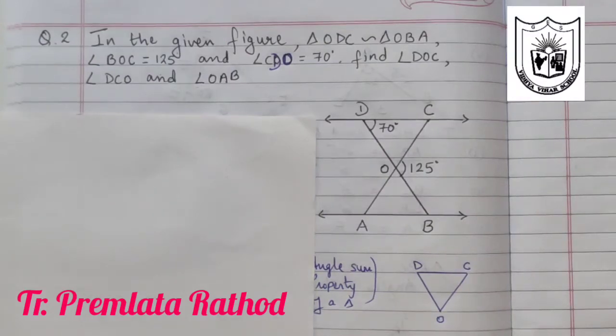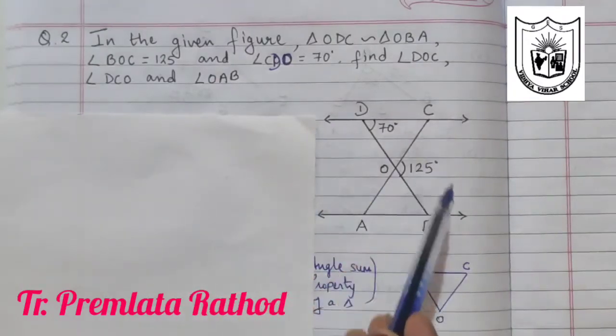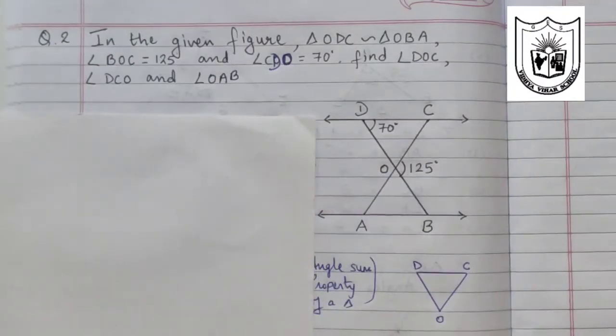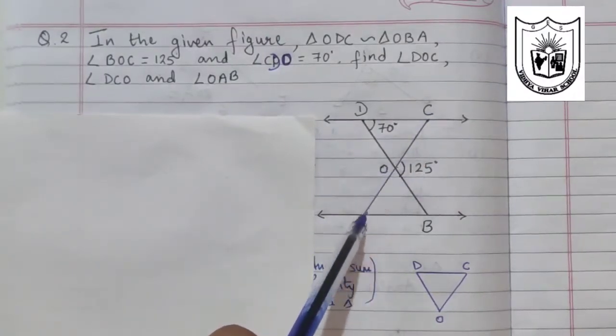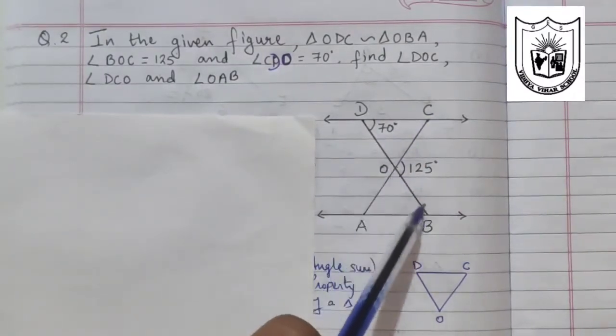Let us solve the second problem from exercise 6.3. We have the figure which is given to us here. This line is parallel to this line. In this given figure, triangle ODC is similar to triangle OBA.